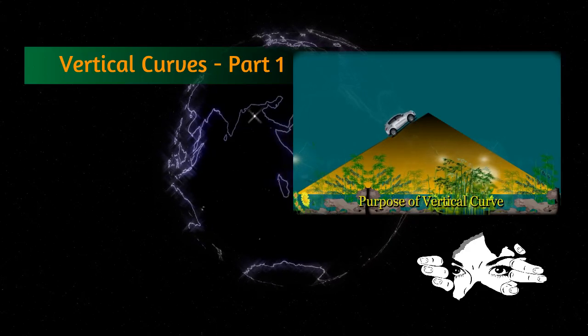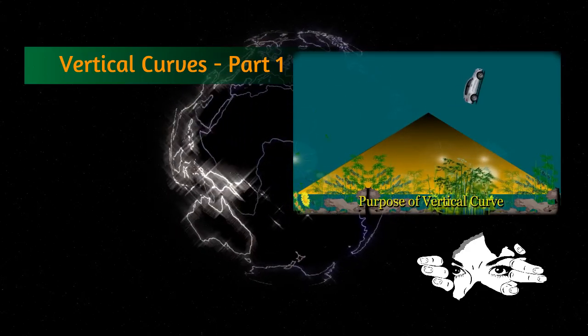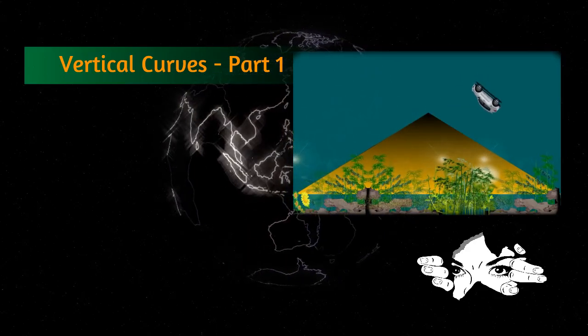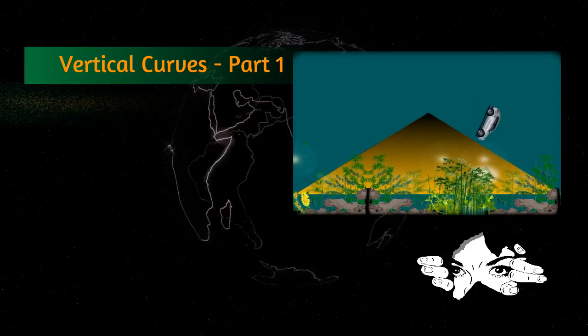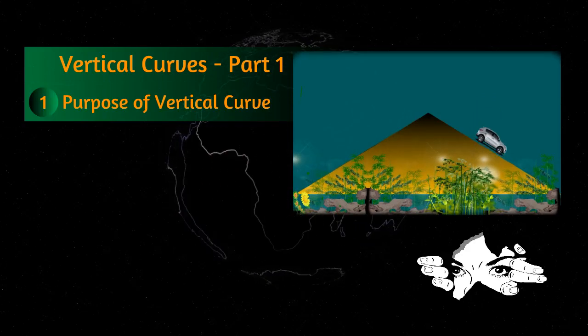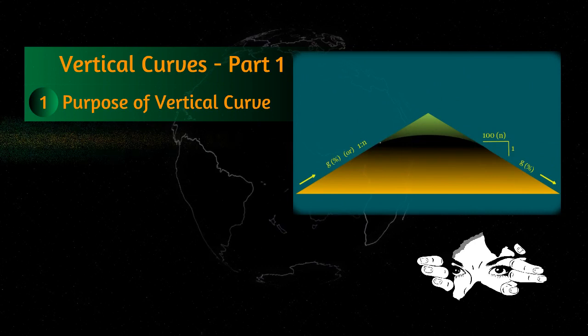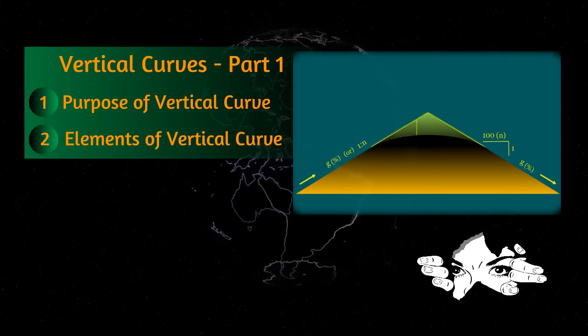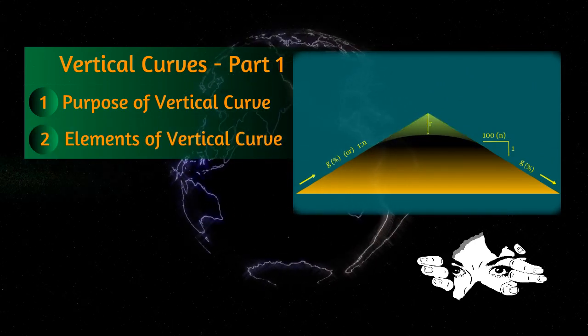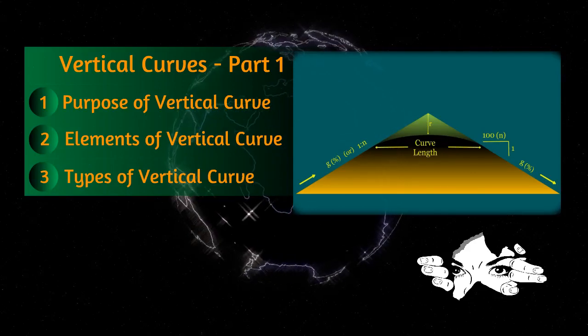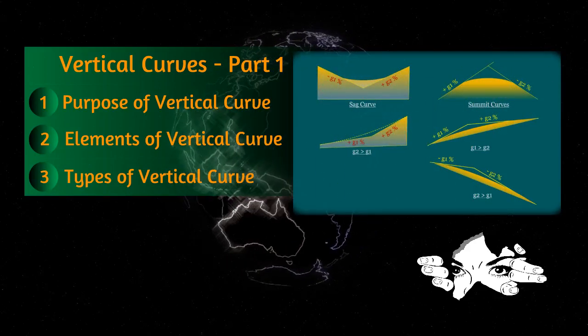This episode is part one of three. In this episode, we will see the basic elements of the vertical curve, such as the purpose of the vertical curve, the elements of vertical curve, the types of vertical curve, and the importance of sight-stopping distance.